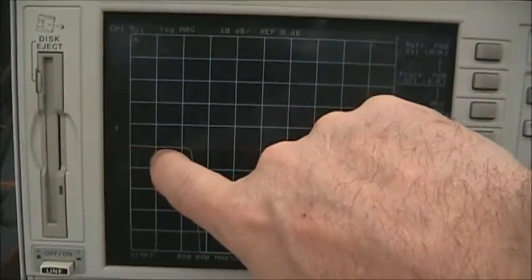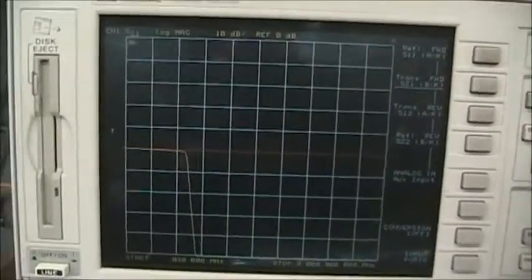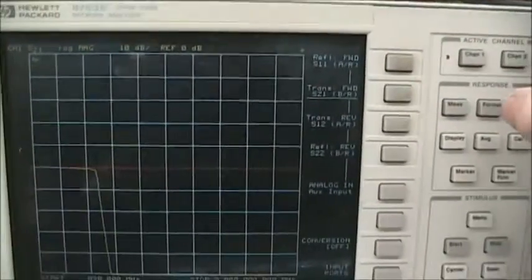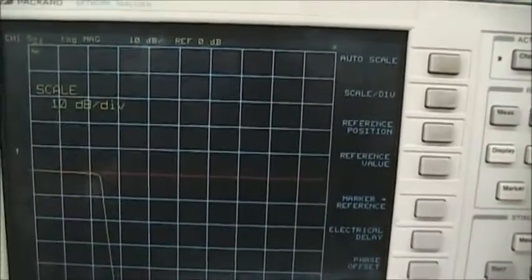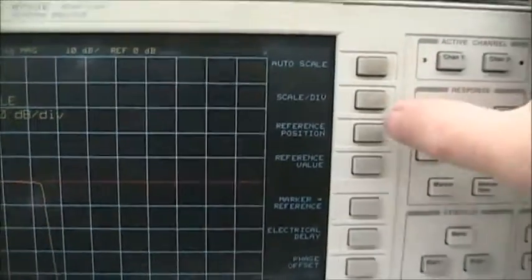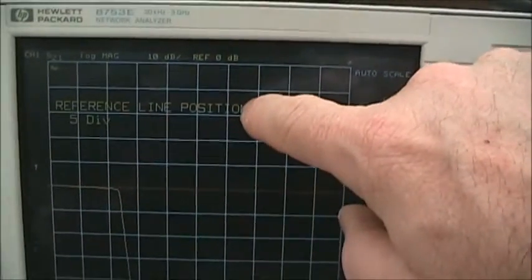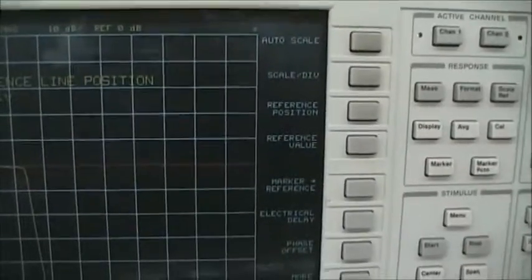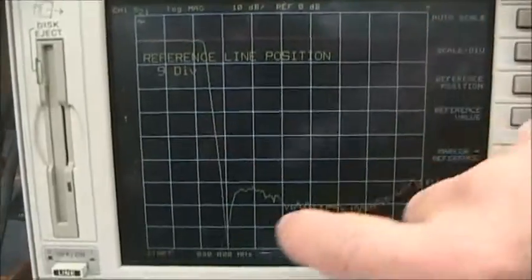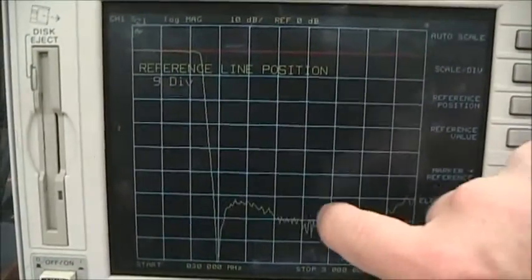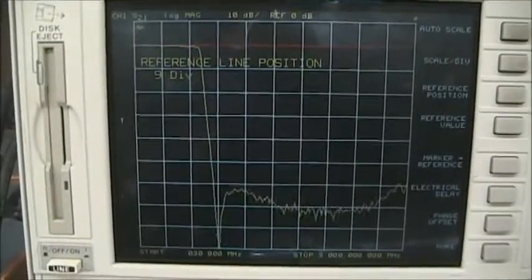Here we see the filter, we have a response, and then it's attenuated. I'm going to change the display to better look at the filter response by changing the reference. I'm going to move the red line up by moving the reference position to the ninth division, and we see a better display. Now we can even see the area below 40 dB reduction.